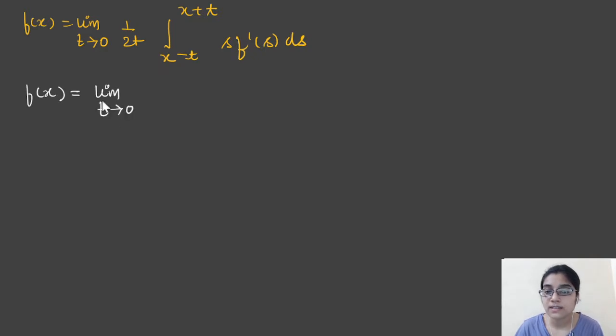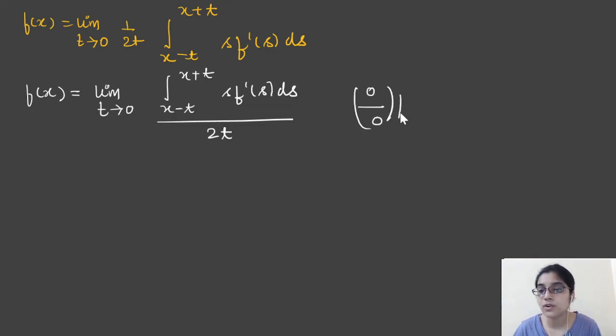How? Because this is a question from the limit, they converted it into numerator by denominator form. Once they applied the limit, if they applied t tending to 0, the limit of the integral becomes from x to x, that is it equals 0, and denominator is also 0. It means it is a 0 by 0 form. So we have to use L'Hôpital's rule.